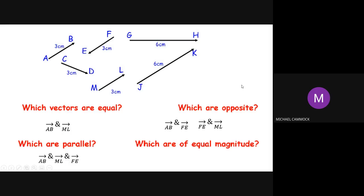How about equal magnitude? Look at the vectors and tell me which ones are of equal magnitude — just magnitude, not direction. AB, FE, CD, and ML are all equal in magnitude. There is another set that are also equal in magnitude: JK and GH. They don't seem to run in the same direction and they don't, but magnitude refers to the length of the vector, so JK and GH are the same length.